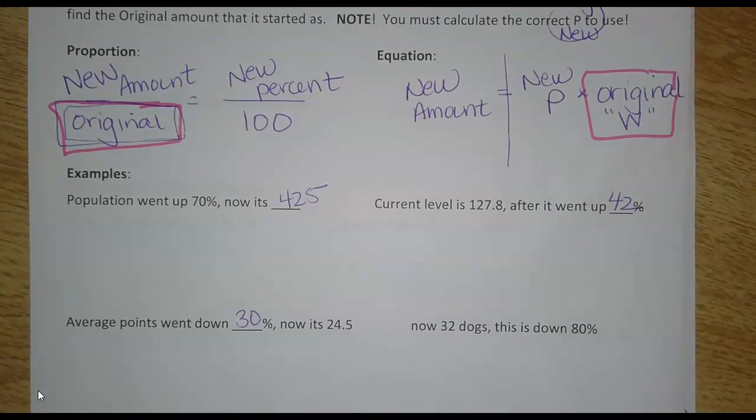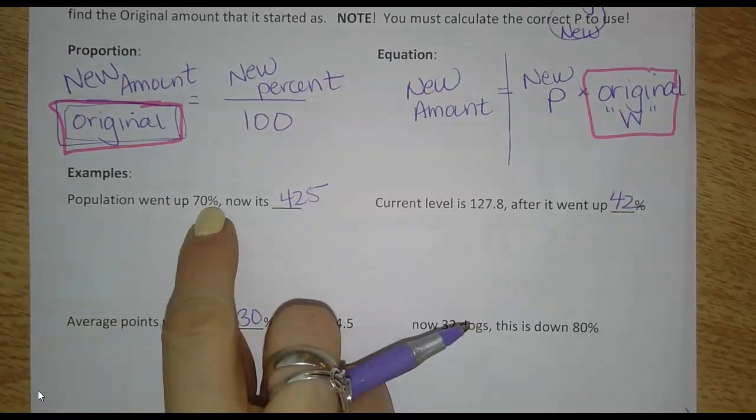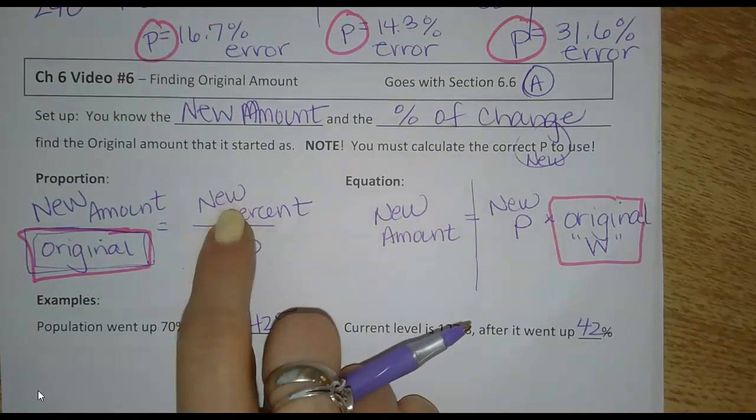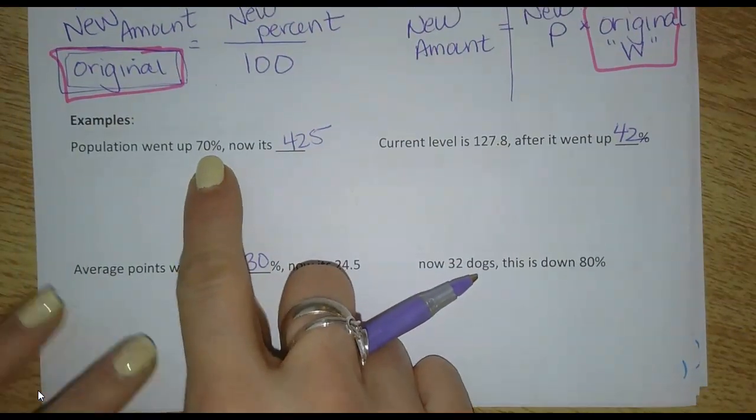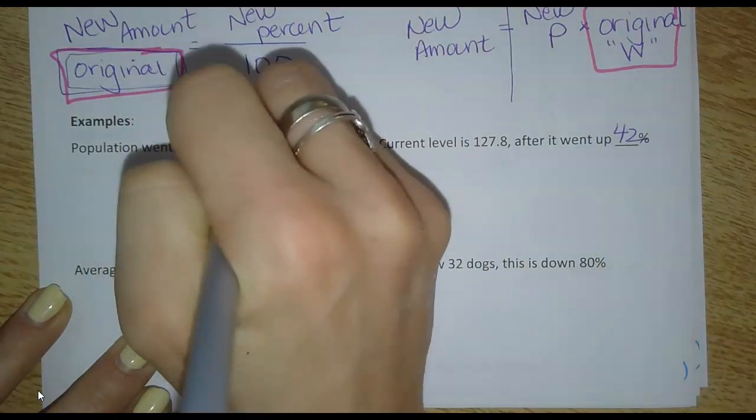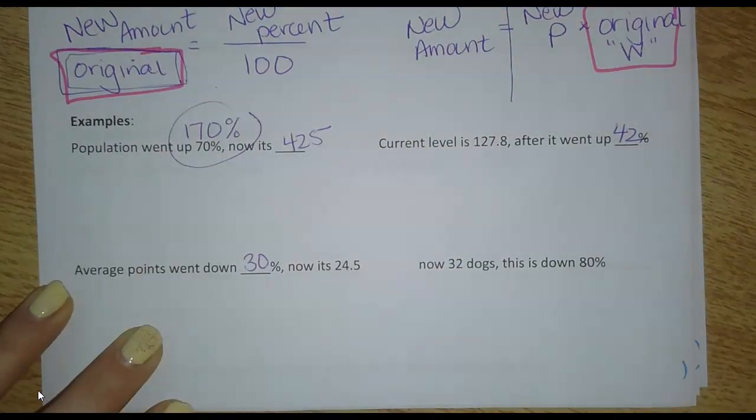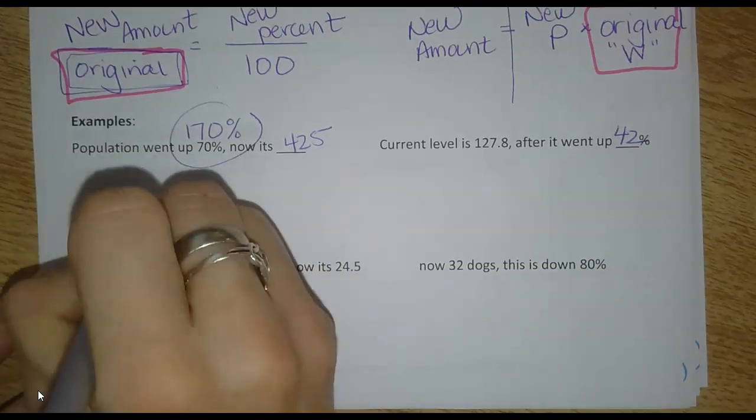All right. This first one, it says the population went up 70%. Now it's at 425. So if it went up 70%, they're telling me this percent of change, but I need to figure out what is it now? What's the new percent that it's at now? So if something goes up 70%, that means now it's at 170%. The original was 100. It went up by 70. Now it's at 170. So this is what I'm going to actually plug in for P in my proportion.